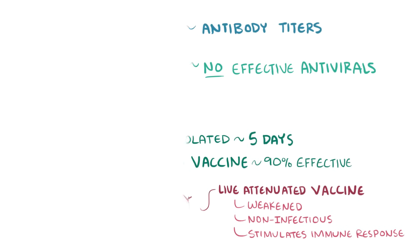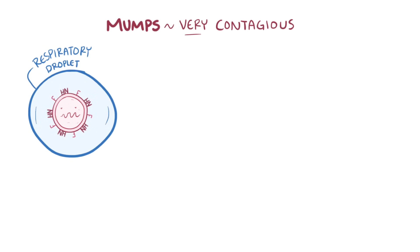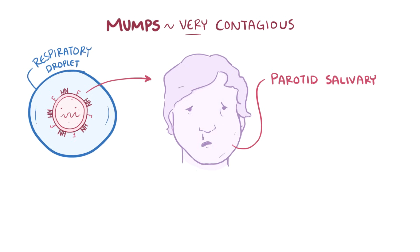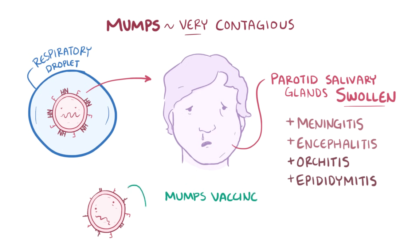As a quick review: mumps is very contagious and spreads through the air by respiratory droplets, and most classically infects the salivary parotid glands, causing them to become swollen, but can also cause meningitis, encephalitis, orchitis, and epididymitis. Luckily, there's a mumps vaccine that's safe and effective in preventing nearly 90% of cases.